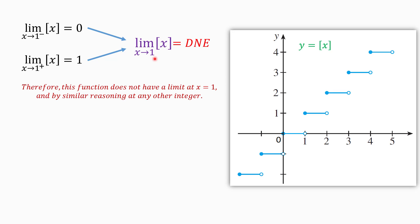In general, by similar reasoning, we can prove that the greatest integer function does not have a limit at any integer. For example, the limit of the greatest integer of X as X approaches 3: from the left the y-values equal 2, from the right the y-values equal 3. Because they are not equal to each other, the function does not have a limit at 3. In general, the greatest integer function does not have a limit at any integer number.